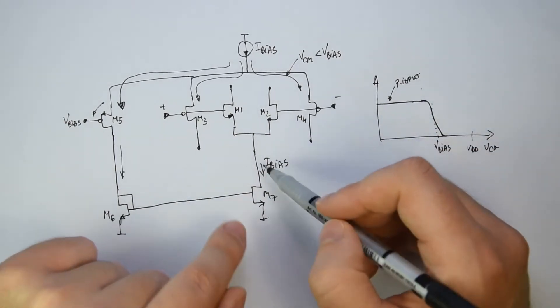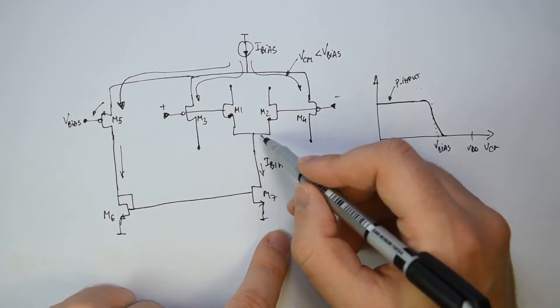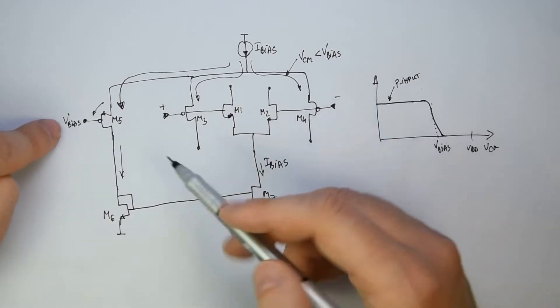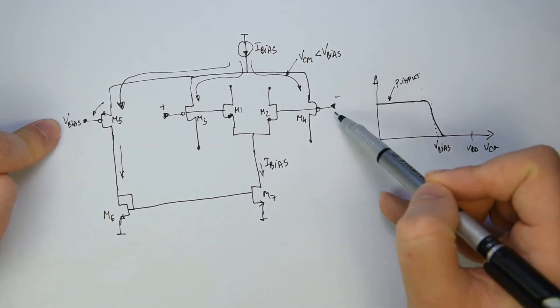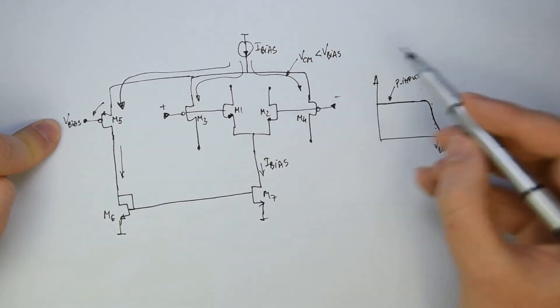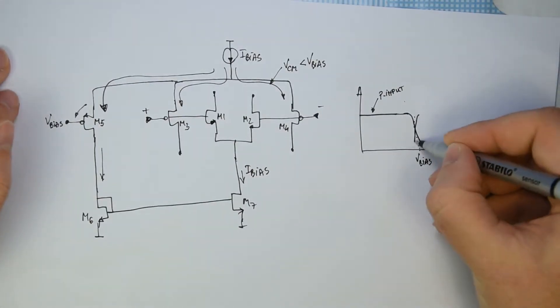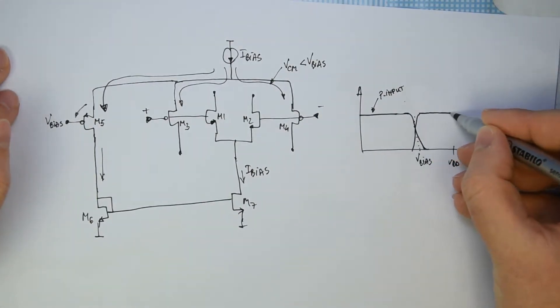And since the biasing current for the PMOS is happening, is appearing exactly in the moment when the common mode voltage is slightly higher than the Vbias, means on this plot that we have a GM that is rising and then continues to VDD.